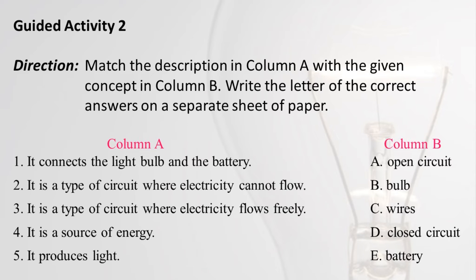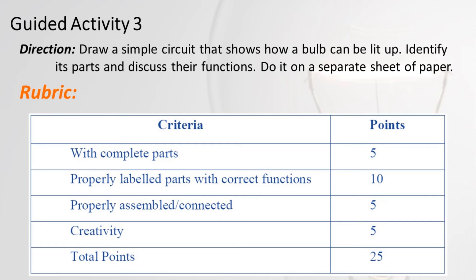Guided Activity 2 — Direction: Match the description in Column A with the given concept in Column B. Write the letter of the correct answer on a separate sheet of paper. Column A: (1) It connects the light bulb and the battery. (2) It is a type of circuit where electricity cannot flow. (3) It is a type of circuit where electricity flows freely. (4) It is a source of energy. (5) It produces light. Column B: A) open circuit, B) bulb, C) wires, D) closed circuit, E) battery.